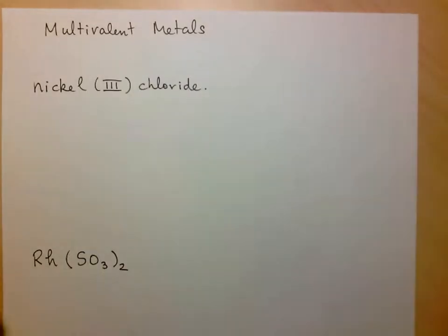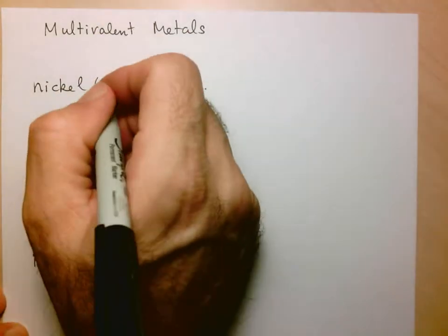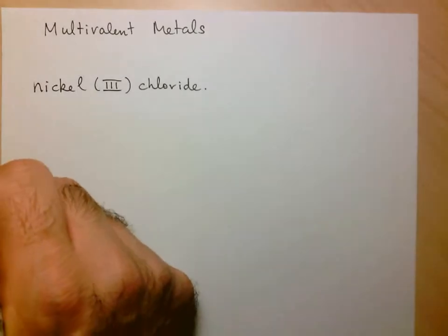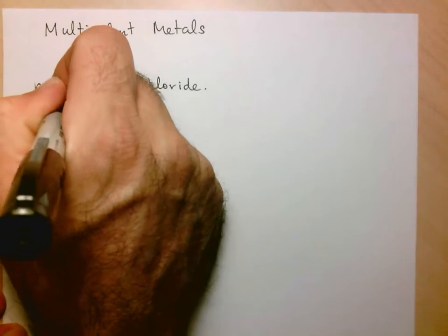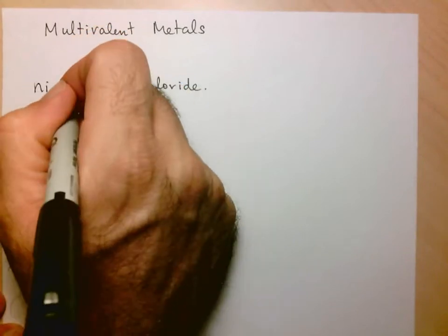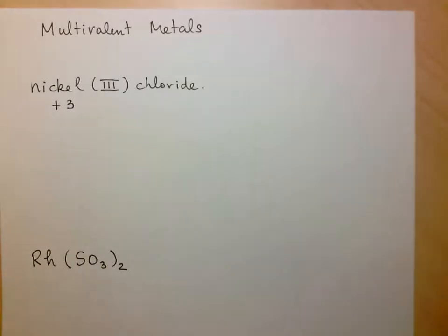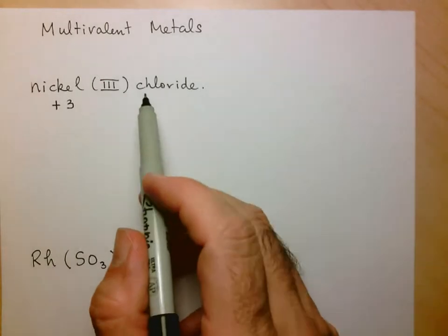So in this case here, because it specifically tells me that it's nickel 3, I know automatically, I didn't even need to check the periodic table, that the charge that we're working with is plus 3. Now secondly, we've got chloride.